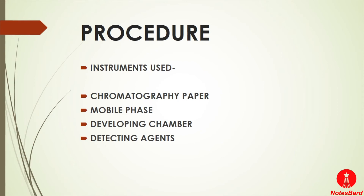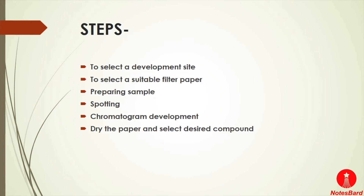Now let's discuss the steps of the paper chromatography method. The first step is to select a development site, decided based on the complexity of the solvent, the stationary phase, and the sample mixture. The second step is selection of a suitable filter paper as the stationary phase — chosen based on the pore size of the filter paper and the sample quality.